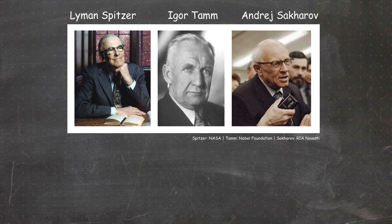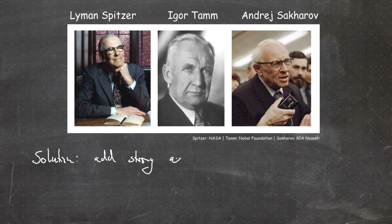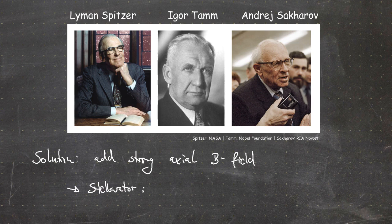One solution to overcome the problems with pinches was proposed by three men: Lyman Spitzer, one of the fathers of the Hubble Space Telescope program, and Igor Tamm and Andrei Sakharov from the Soviet Union. What they suggested was adding a strong axial magnetic field to get better confinement. Spitzer's solution using coils only is called the stellarator, while the Soviet solution pursued by the Soviet colleagues is the tokamak.